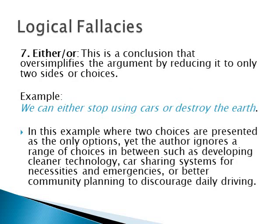An either/or fallacy is a conclusion that oversimplifies the argument by reducing it to only two sides or choices. For example: we can either stop using cars or destroy the earth. In this example, the author ignores a range of choices in between, such as developing cleaner technology, car-sharing systems for necessities and emergencies, or better community planning to discourage daily driving. Rarely in any situation are there only two potential choices, so either/or fallacies are almost always problematic.